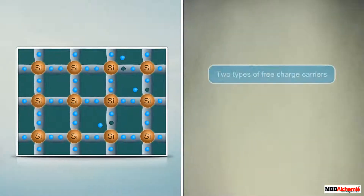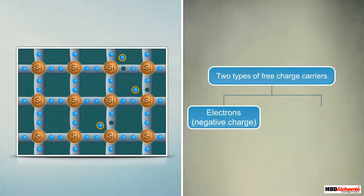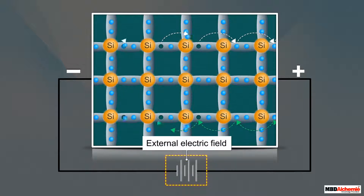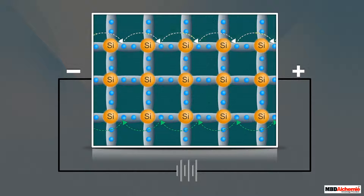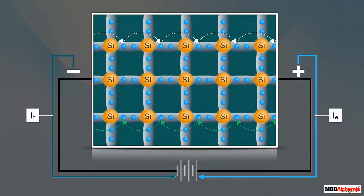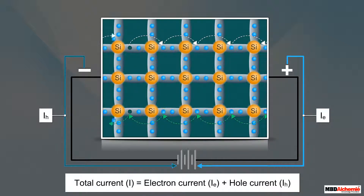Thus in intrinsic semiconductors there are two types of free charge carriers: electrons with a negative charge and holes with a positive charge. The number of free electrons is equal to the number of holes, and this concentration is also known as the intrinsic carrier concentration. When an external electric field is applied, electrons move towards the positive terminal of the battery and holes move towards the negative terminal. The movement of electrons gives rise to an electron current i_e, and the movement of holes gives rise to a hole current i_h. The total current i in the semiconductor is the sum of i_e and i_h.